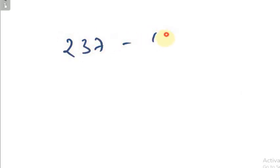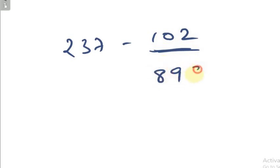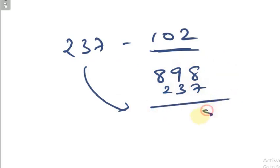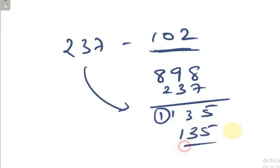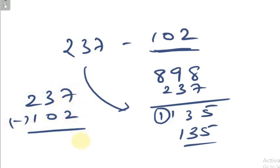Like this, you can find the answer for any number. For example, 237 minus 102. Find the complement of 102: 9 minus 1 is 8, 9 minus 0 is 9, 10 minus 2 is 8. Complement is 898. Add 237 plus 898: you get 1135. Carry the 1, giving 15, then 13. Discard the leading digit — answer is 135. Direct subtraction of 237 minus 102 also gives 135. Same answer.